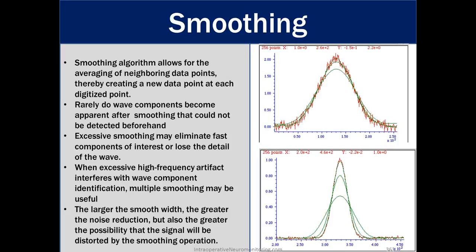Smoothing. Smoothing algorithm allows for the averaging of neighboring data points thereby creating a new data point at each digitized point. Rarely do wave components become apparent after smoothing. They could not be detected beforehand. Excessive smoothing may eliminate fast components of interest or lose the detail of the wave. When excessive high frequency artifact interferes with the wave component identification multiple smoothings may be useful. The larger the smooth width the greater the noise reduction but also the greater the possibility that the signal will be distorted by the smoothing operation. So this is a I know at least on CAD well this is something we can use to make the wave look prettier but we also need to make sure that we're not sacrificing amplitude height or loss of some smaller far field signals in order to just have a nice pretty picture on our screen.